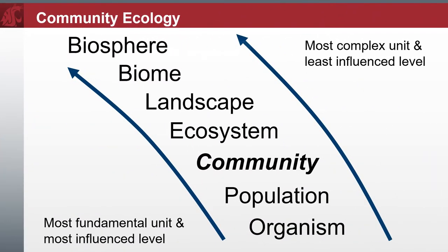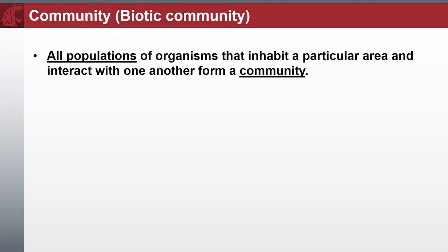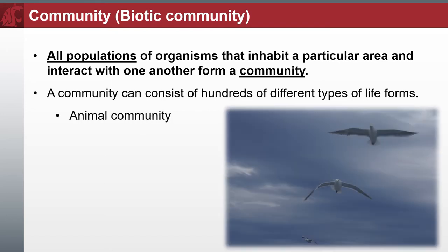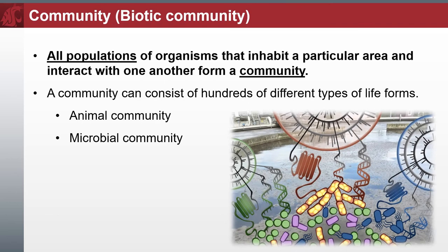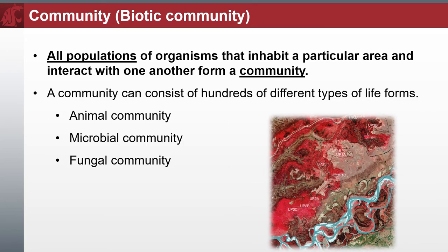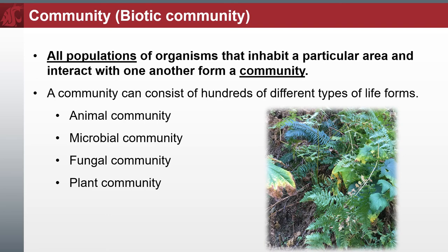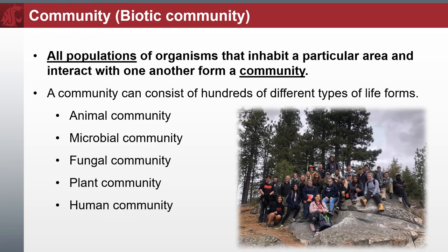Biotic communities are groups of interdependent organisms inhabiting the same region and interacting with each other. While these are often thought of as singular species definitions, they are more importantly not singular — this considers interactions within species as well as between species. Together, the populations of all the different species that live together in an area make up what is called an ecological community. For instance, if we wanted to describe the ecological community of a coral reef, we would include the populations of every single type of organism we could find, from coral species to fish species to the single-celled, photosynthetic algae living in the corals.